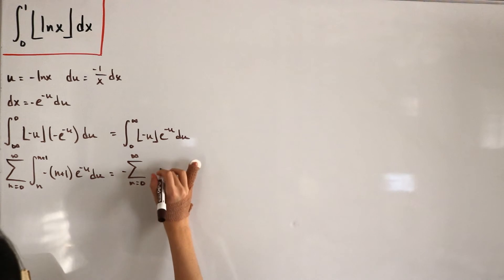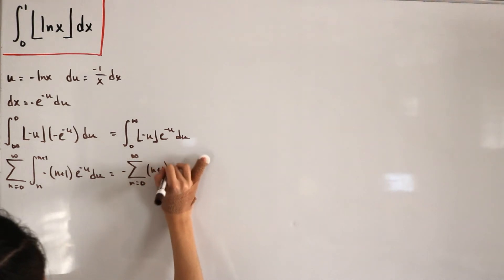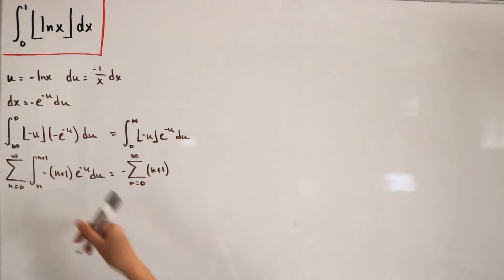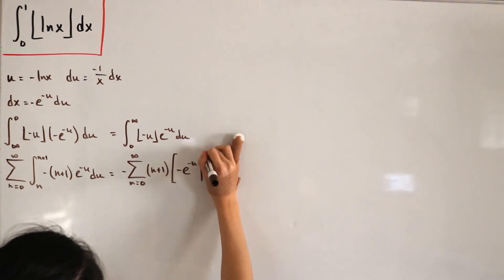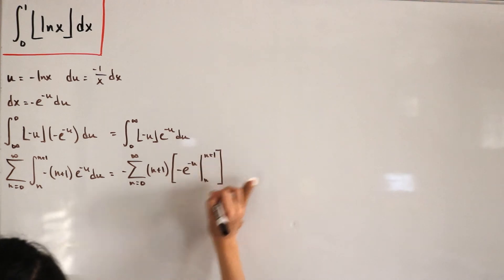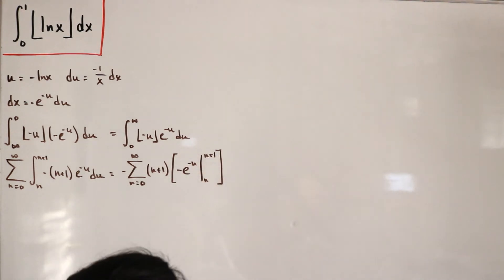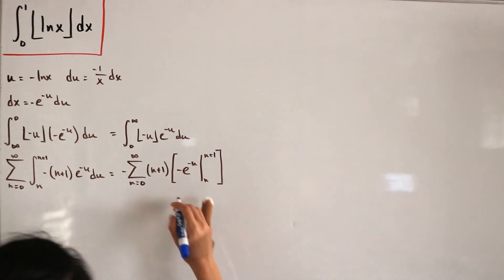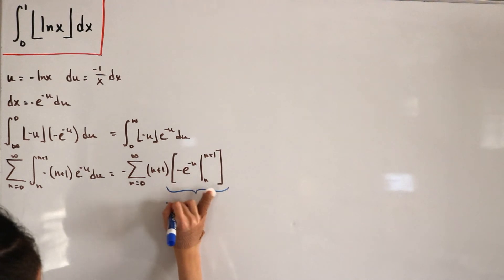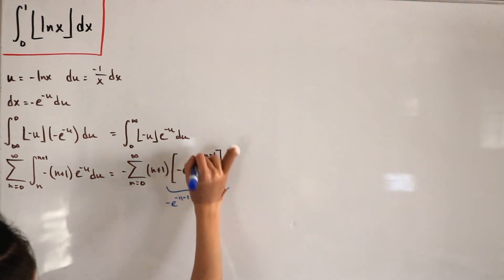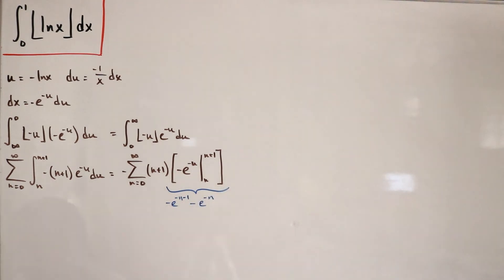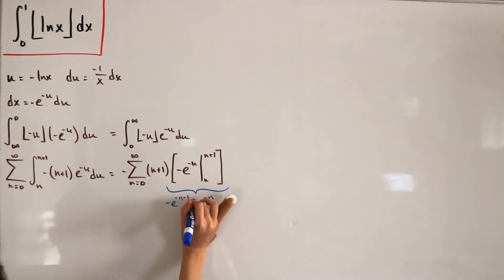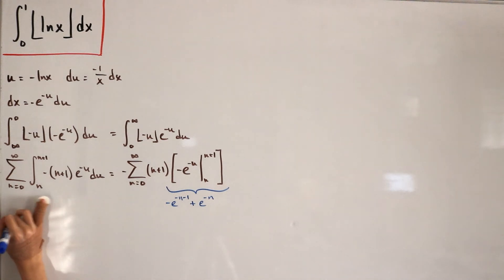Inside the sum we have (n+1) times the integral from n to n+1 of e^(-u) du. The antiderivative of e^(-u) is -e^(-u), evaluated from n to n+1. This gives -e^(-(n+1)) minus (-e^(-n)), which simplifies to e^(-n) - e^(-(n+1)).